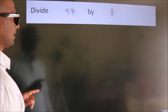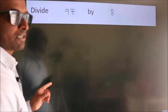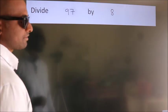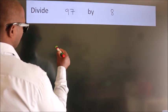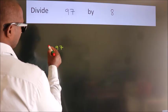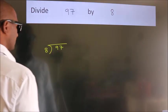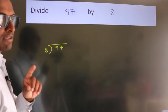Divide 97 by 8. To do this division, we should frame it in this way. 97 here, 8 here. This is your step 1.